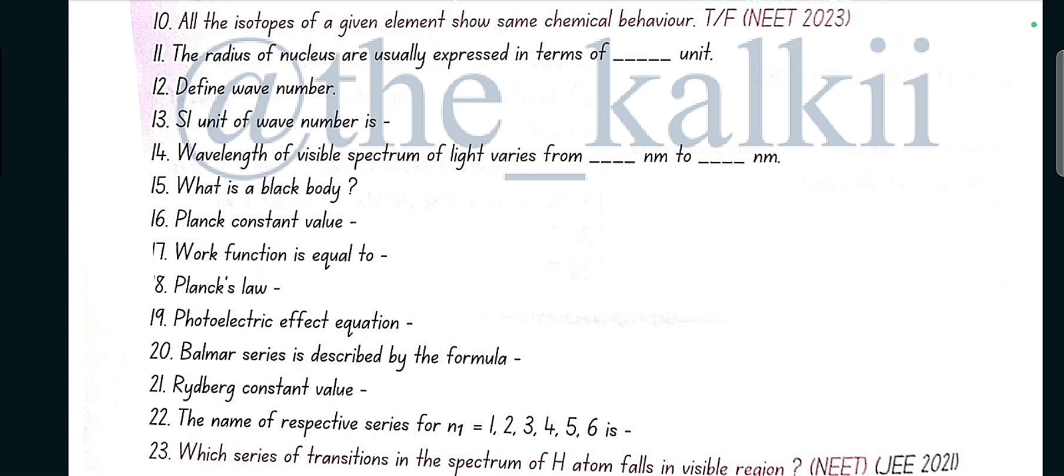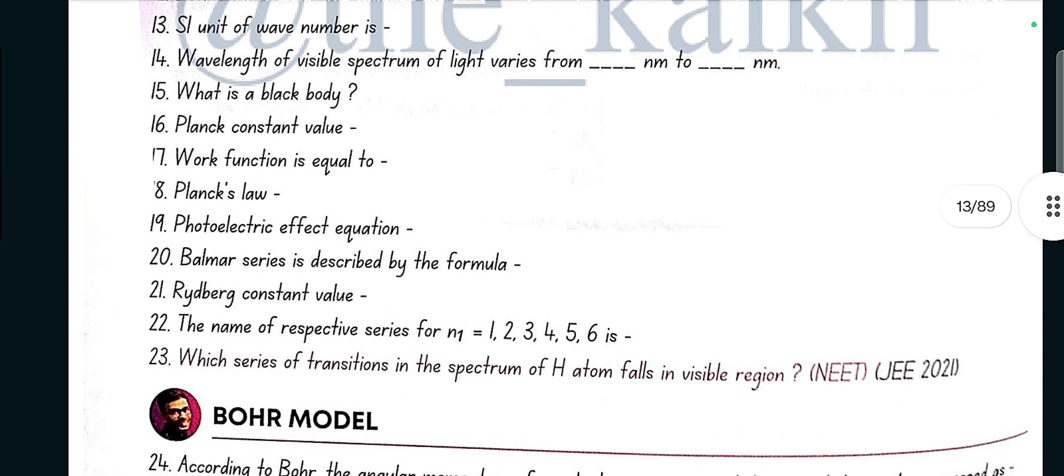Balmer series is described by the formula: wave number equals 109,677, 1 upon 2 square minus 1 upon n square. So here n1 value is equal to 2 for Balmer series. Rydberg constant value is 109,677 centimeter minus 1, or 2.18 into 10 raised to the power minus 18 joules.